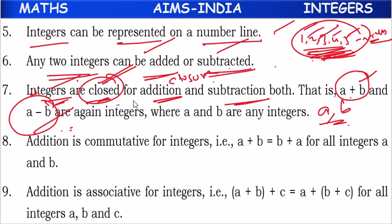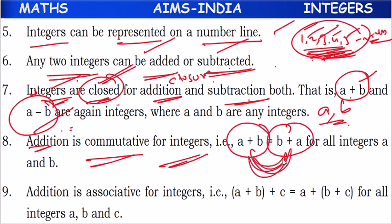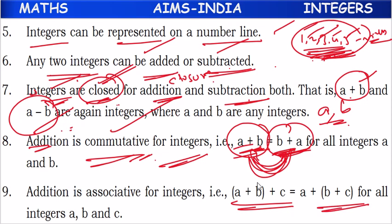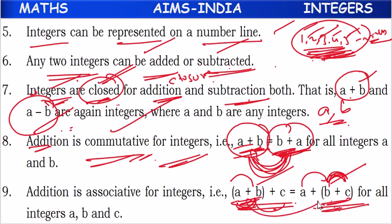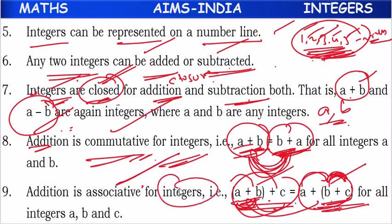Not only two numbers — three integers we can add in any way. Here, a and b are associated with each other, then added with c; or b and c are associated with each other, then added with a. The grouping may be (a plus b) or (b plus c), but the sum of three integers is always the same. We can add in any order — this is called the associative property. Integers follow associative property under addition.